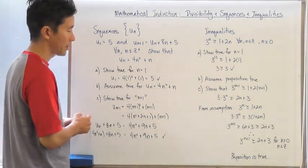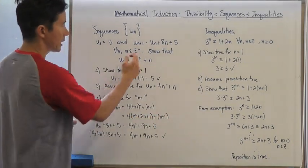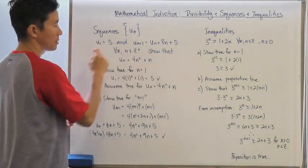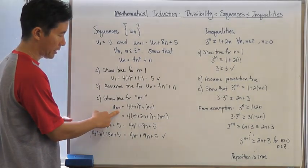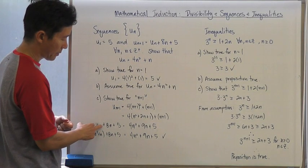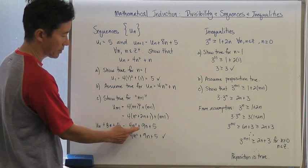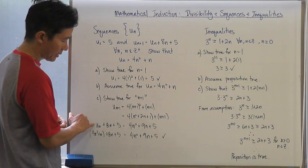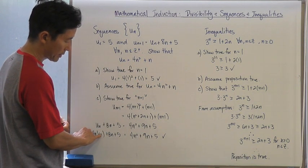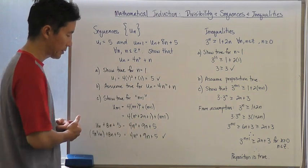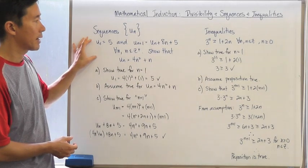Substituting n+1 gives 4 times (n+1) squared plus (n+1), which we can expand. Now, u sub n+1 is also defined as u sub n plus 8n plus 5, and the right-hand side is 4n squared plus n plus 8n plus 5. Since u sub n is assumed true, I substitute 4n squared plus n for u sub n. Both sides are the same, and therefore we can conclude the proposition is true.